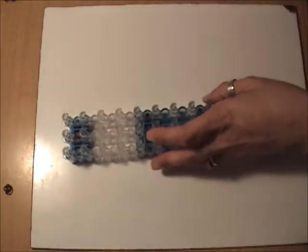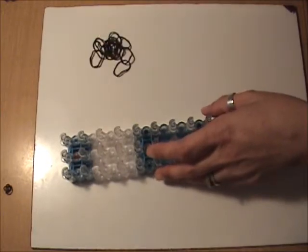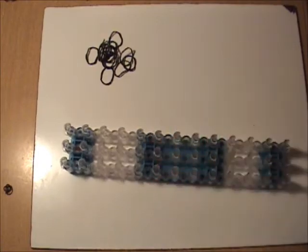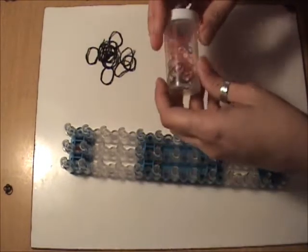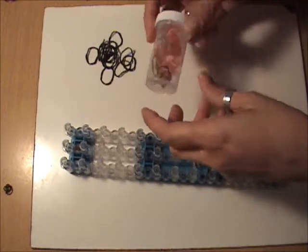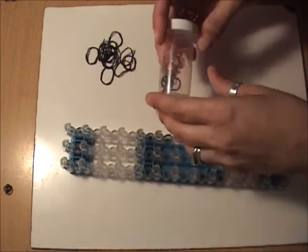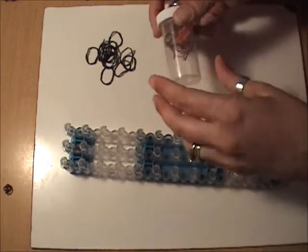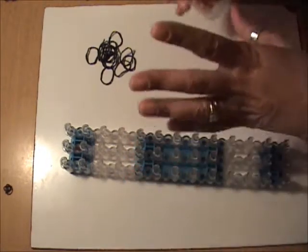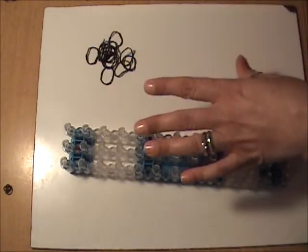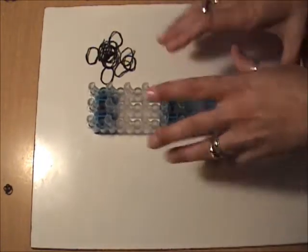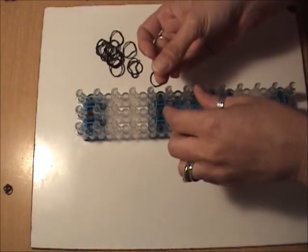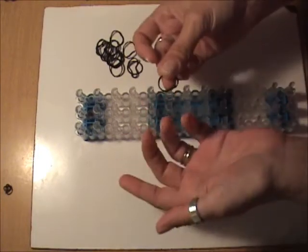I'm going to get started with black bands, and I don't know if anybody is as neurotic as I am, but I save bands that I've used before that can't be used again for a regular project, like ones that have been double looped, or looped but have lost their shape, for just a purpose such as this, where they need to be double looped, as these do for the stethoscope. So, for the stethoscope, we are going to use single black bands, and they will all be doubled.